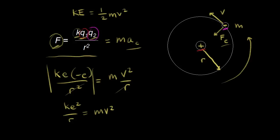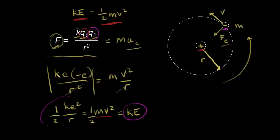We're almost to what we want. Our goal was to find an expression for kinetic energy, which is one-half mv squared, and here we have mv squared. So if we multiply both sides by one-half, we get an expression for the kinetic energy of the electron: the kinetic energy equals one-half Ke squared over R.